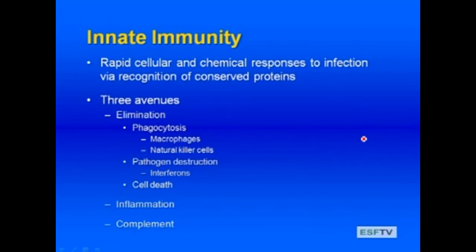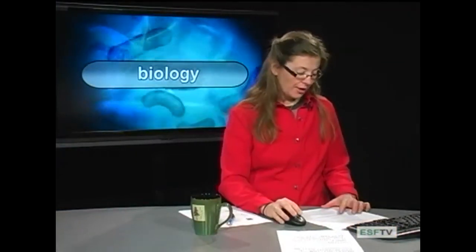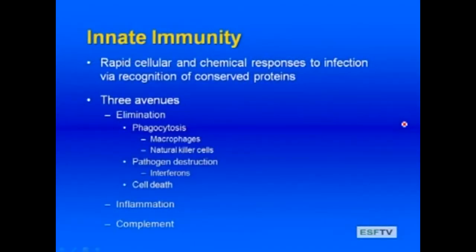Innate immunity is the nonspecific immune system response, consisting of cellular and chemical responses to an infection via recognition of conserved proteins. This is usually a rapid response to any microbial infection, predicated on conserved proteins present on the exterior of invaders. This response occurs via three avenues: elimination or destruction of an invader via phagocytosis conducted by macrophages and natural killer cells; pathogen destruction through release of interferons; as well as inflammation response and a complement response.